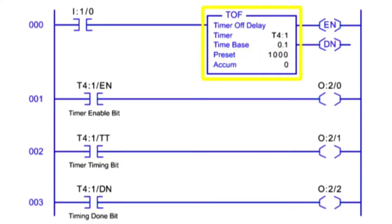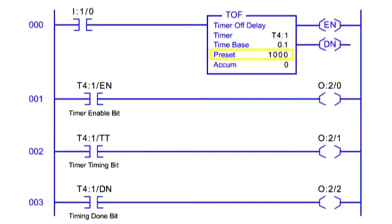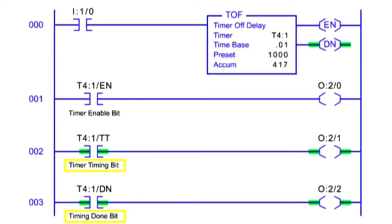The Timer Off Delay instruction is used to turn an output on or off after the timer has been off for the preset time interval. Similar to the Timer On Delay, the Timer Off Delay uses the same control bits, time base, and preset functions. The Timer Off Delay sets the Enable and Done bits when input conditions are true. When the input conditions change to false, the Timer Timing Bit goes true. As the accumulated value reaches the preset value, the Done and Timer Timing bits turn off.